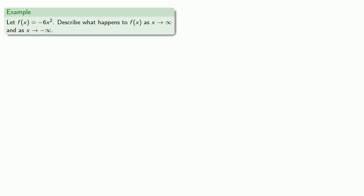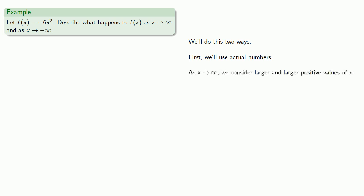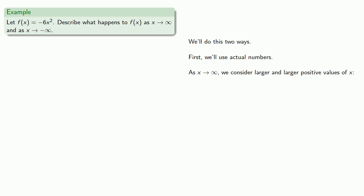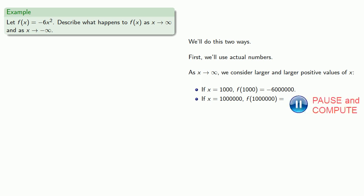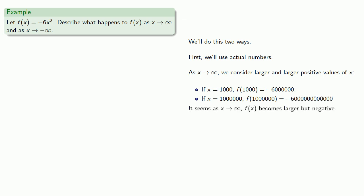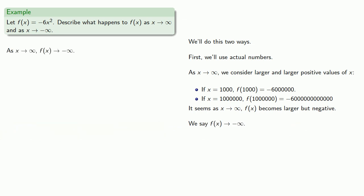For example, let f(x) = −6x², and let's describe what happens to f as x → ∞ and as x → −∞. We'll do this two ways — first using actual numbers. As x → ∞, we consider larger and larger positive values of x. If x = 1,000, we find f(1,000), and if x = 1,000,000, we find f(1,000,000). It seems that as x → ∞, f(x) becomes larger but negative, so we say f(x) → −∞.